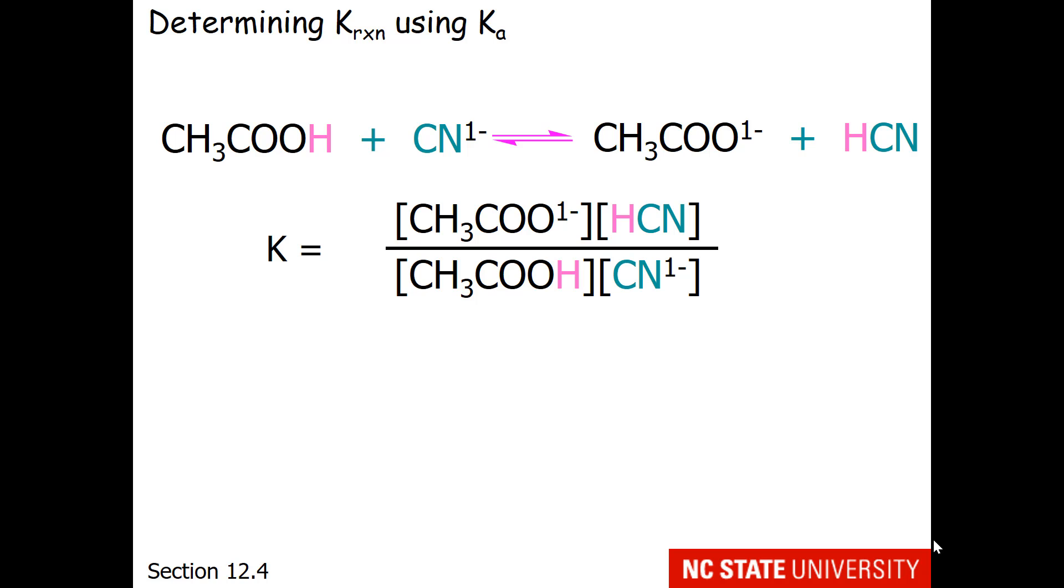Let's go back to our earlier reaction where acetic acid is reacting with cyanide to make acetate and hydrocyanic acid. All of these are aqueous materials, so the equilibrium expression is going to be products divided by reactants all raised to the first power.